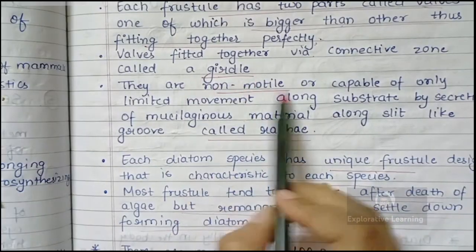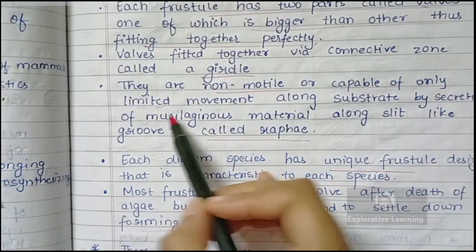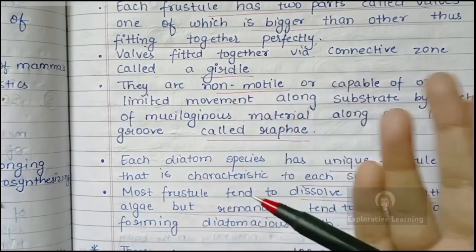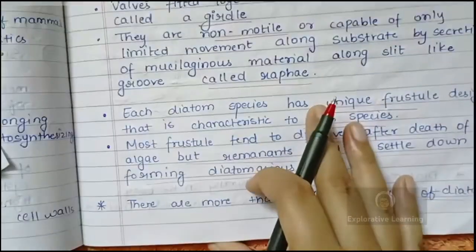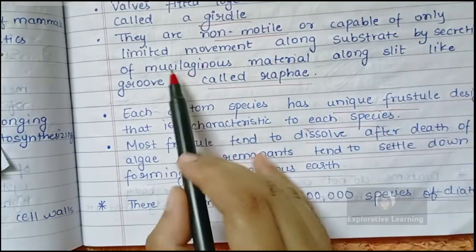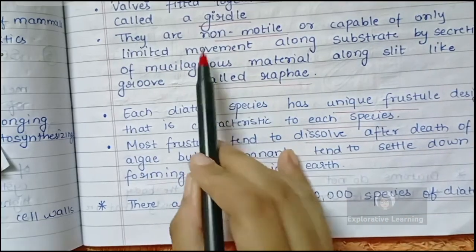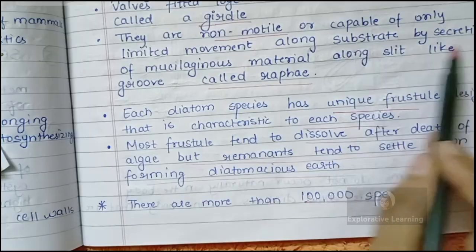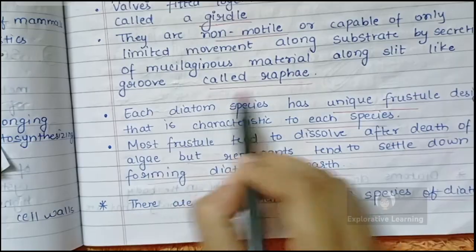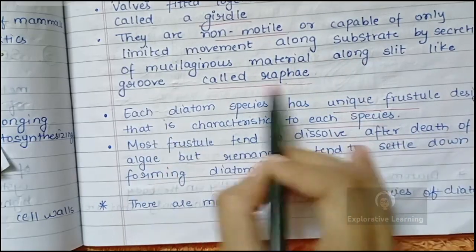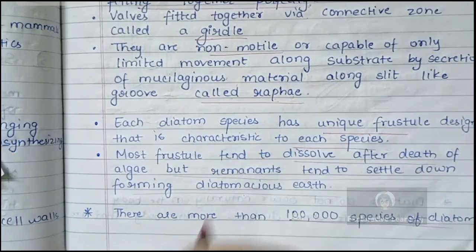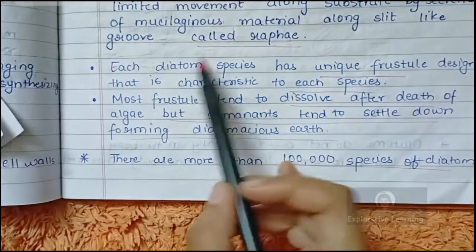Diatoms are non-motile in nature and can only move from one place to another via some external agent. They carry out some limited movement along a substrate by secreting a mucilaginous material. They have a slit-like structure known as the raphe through which this mucilaginous material is secreted.